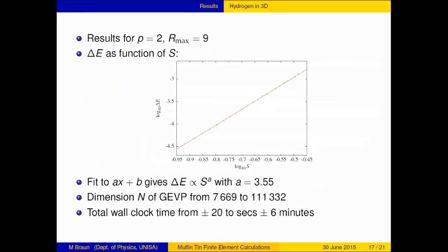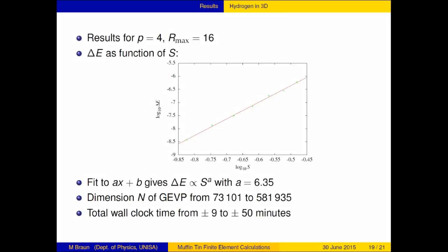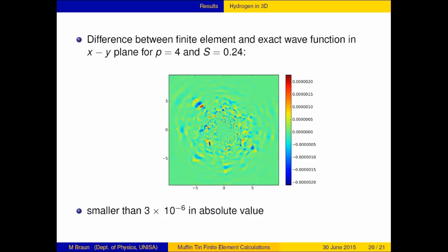Here you can see the square of the wave function. This is for second order. The total wall clock time goes from 26 to 20 minutes. The difference between exact and calculated wave function is smaller than 10 to the minus 4 in absolute value. Now the same thing for P equals 4. I have done a least squares fit. The clock time goes up heavily, so I will probably only do this for the final iteration. The accuracy is very good.